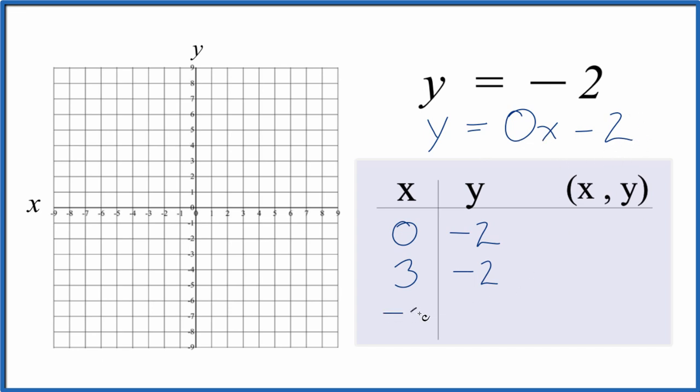So let's say negative 5, 0 times negative 5 is 0, y is negative 2. So these are the points we can graph for this linear equation, y equals negative 2.